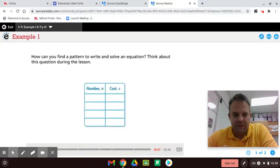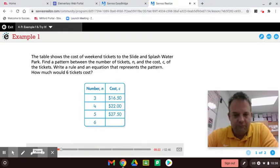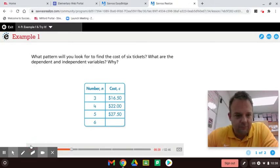How can you find a pattern to write and solve an equation? Think about this question during the lesson. The table shows the cost of weekend tickets to the slide and splash water park. Find a pattern between the number of tickets N and the cost C of the tickets. Write a rule and an equation that represents the pattern. How much would six tickets cost? What are the dependent and independent variables? Why?